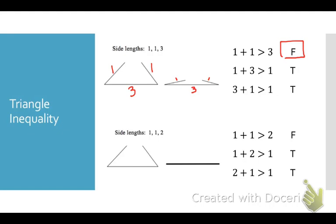If I have a triangle with side lengths of 1, 1, and 2, if I push those two sides together until they touch, they would only touch when lying flat on the side of length 2, because 1 plus 1 is not greater than 2. So these triangles could not exist.